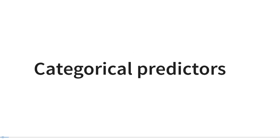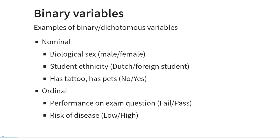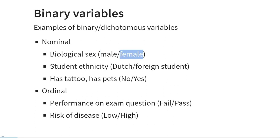Let's refresh our knowledge on categorical predictors. Recall that categorical predictors are either nominal or ordinal. The nominal variable distinguishes between groups that differ only in name, whereas ordinal variables differentiate groups that have a natural order. Probably the most commonly used example of a nominal binary variable is biological sex, where we often distinguish male and female participants.